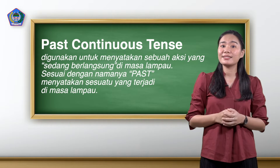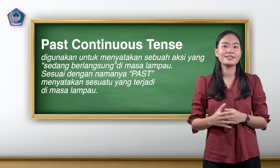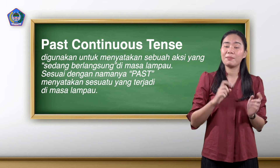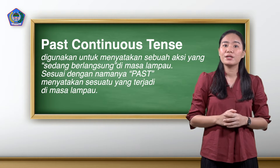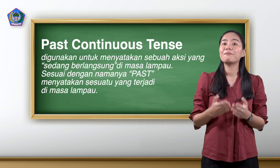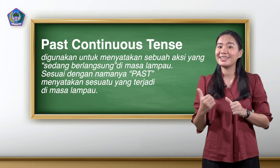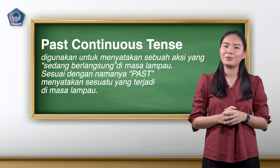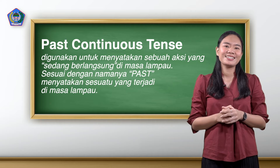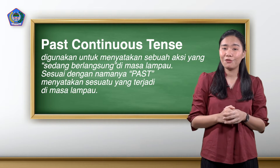Past continuous tense digunakan untuk menyatakan sebuah aksi yang sedang berlangsung di masa lampau. Sesuai dengan namanya, past yang menyatakan sesuatu yang telah terjadi di masa lampau. Before you guys get confused, let's jump straight into the formula.